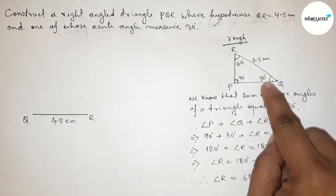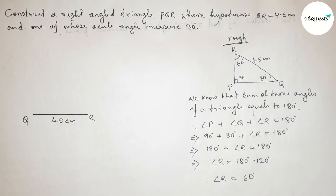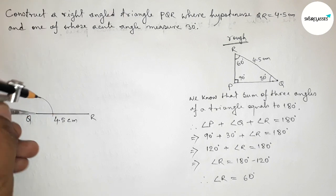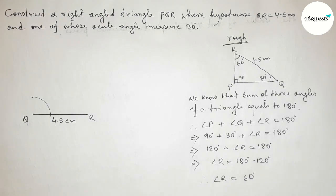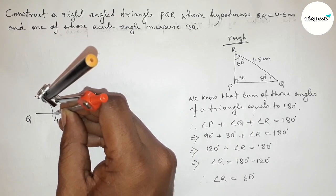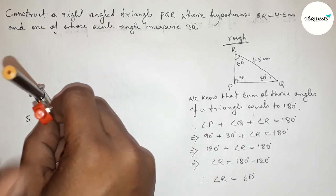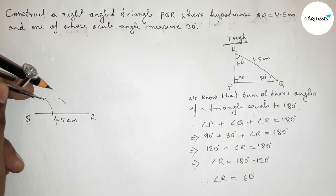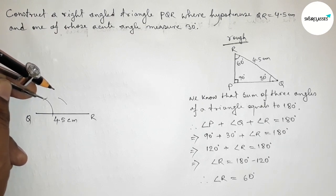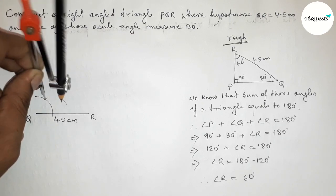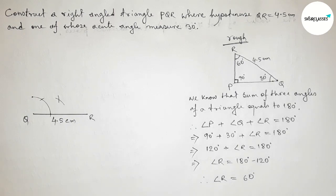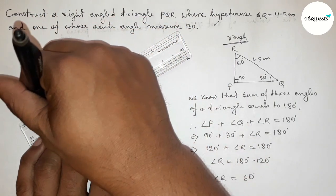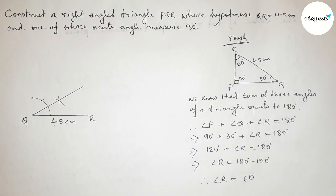Now we draw a 30-degree angle at point Q using a compass. Placing the compass on Q, taking any length, and drawing an arc. Then placing the compass at the arc intersection with the same length, cutting another arc, and joining this line to get a 30-degree angle at Q.